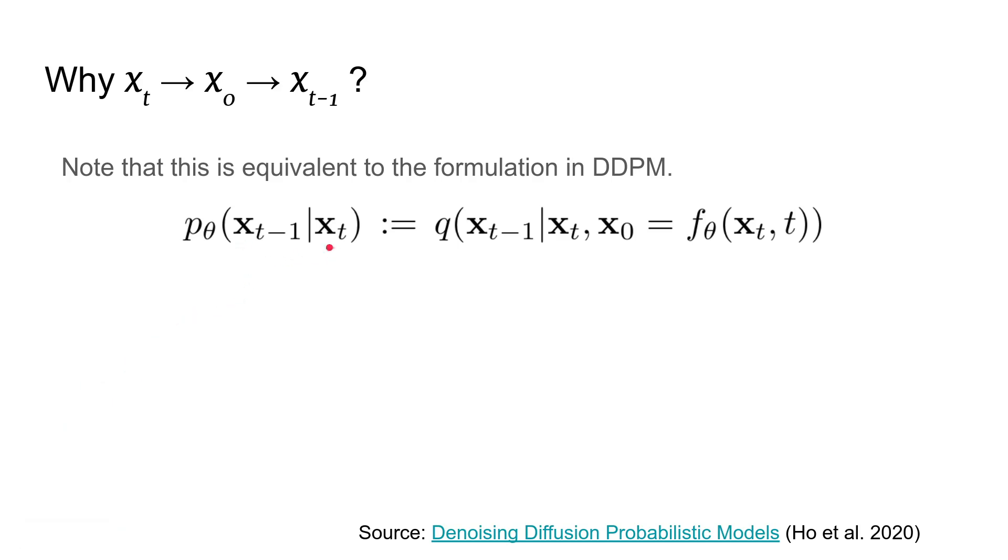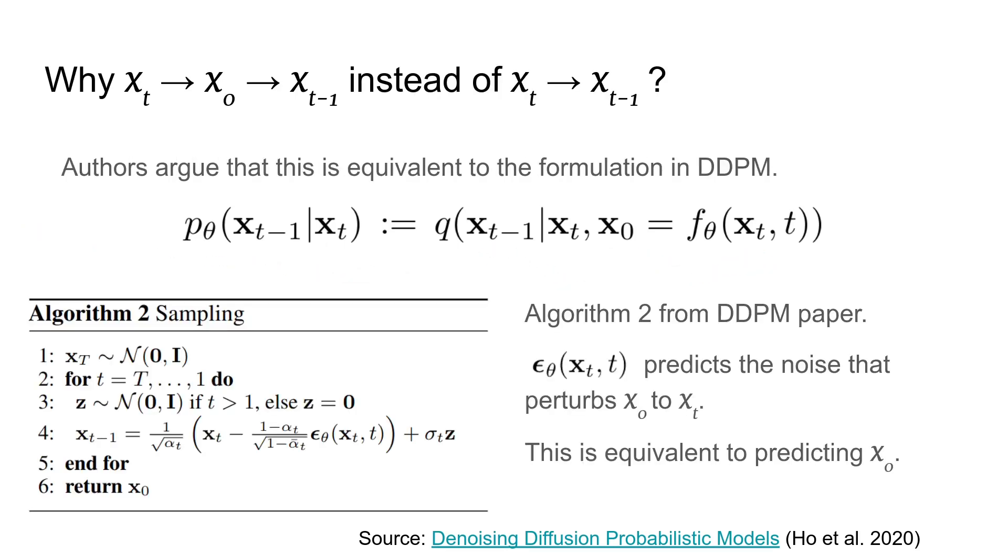The authors argue that this is actually equivalent to the formulation in the original DDPM paper. Predicting x_{t-1} from given x_t is equivalent to predicting x_0 from x_t and then adding noise. Here is algorithm 2 from the DDPM paper. In the equation at line 4, epsilon_theta predicts the noise that perturbs x_0 to x_t. This is basically equivalent to predicting x_0 directly.